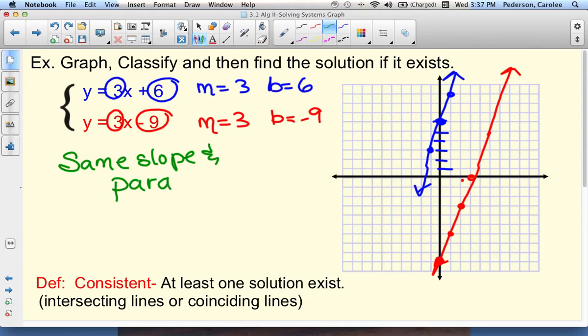Since they have the same slope and are parallel, they don't intersect. So there is no solution possible.